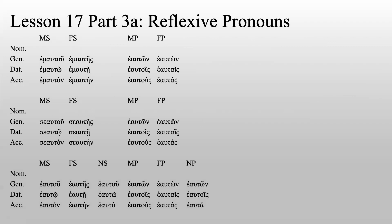Here is the chart of all of them so that we can make some comparisons and contrasts. First off, let's notice how it looks like autos. So we've got autu, auto, auton, autes, autay, autain — no neuters, though.